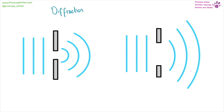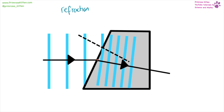Diffraction happens when a wave passes through a gap. With a small gap versus a large gap, the wave will curve around as it comes out — the amount of diffraction depends on the size of the gap. Refraction happens when a wave passes from one medium into another, such as from air into glass or water, and it changes direction. The reason it changes direction is because the wave changes speed, but different parts of the wave change speed at different points.